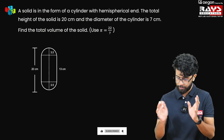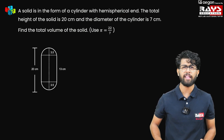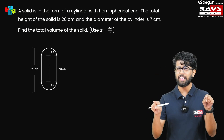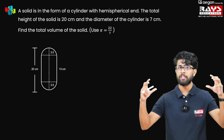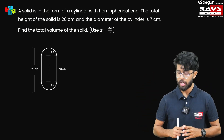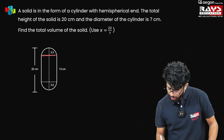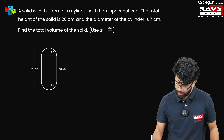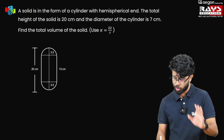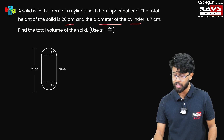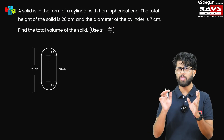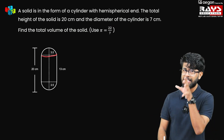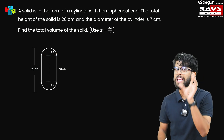Here is the first question which is asked in outside Delhi Set in 2019 — it's a very important question. A solid is in the form of a cylinder with hemispherical ends. That means that particular solid has three parts: one cylinder in the middle and two hemispheres at both ends, as you can see in the figure. The total height of the solid is given as 20 cm and the diameter of the cylinder is given as 7 cm.